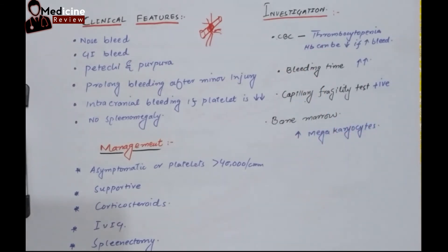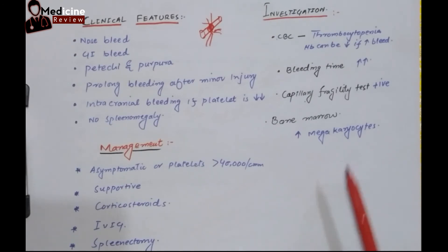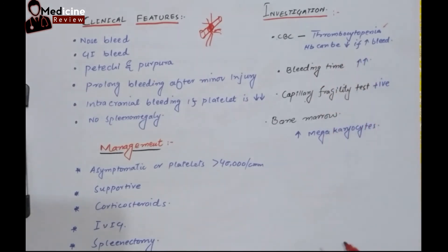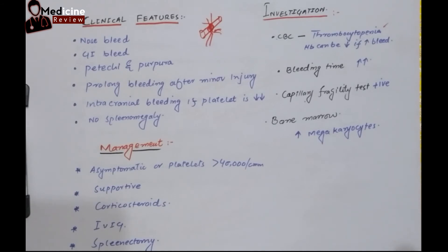ITP is a clinical diagnosis. In investigation, a complete blood count will show thrombocytopenia, which is obvious. Hemoglobin can be decreased if there is increased bleeding. If there is chronic bleeding, there will be microcytic hypochromic anemia. If the blood loss is more acute or prolonged, there will be normocytic normochromic anemia. Bleeding time will also be increased.